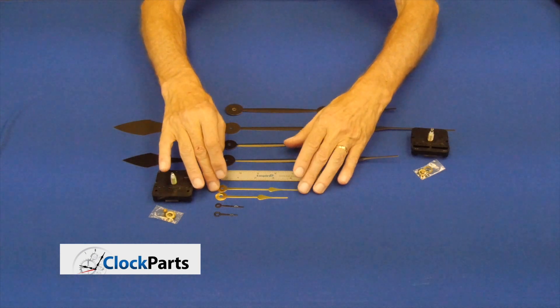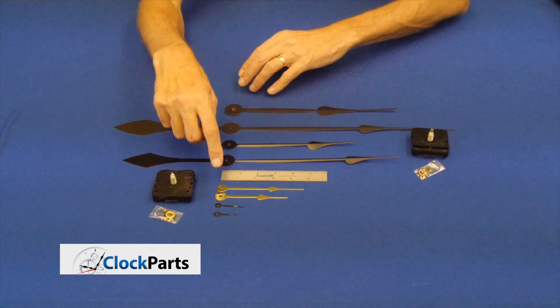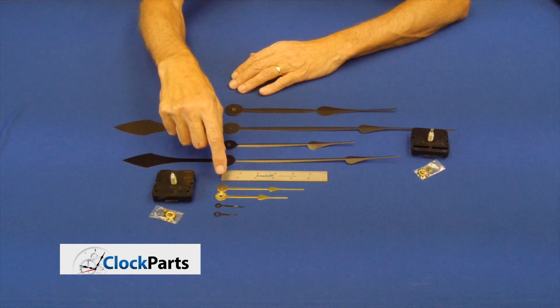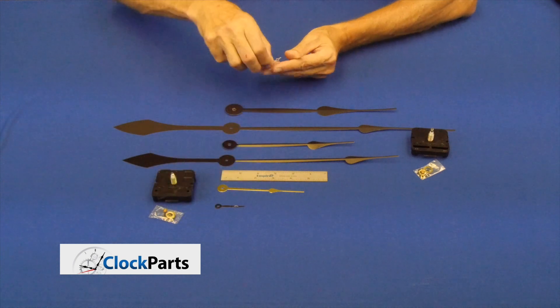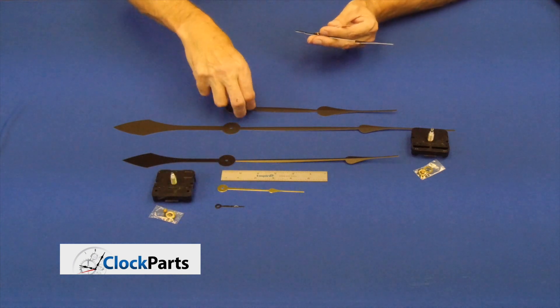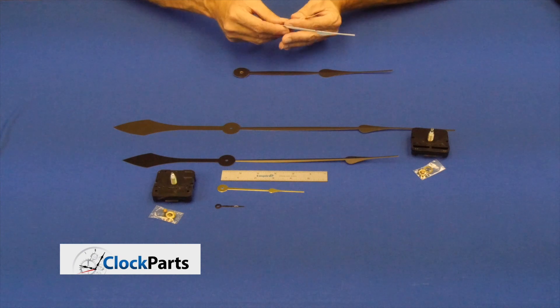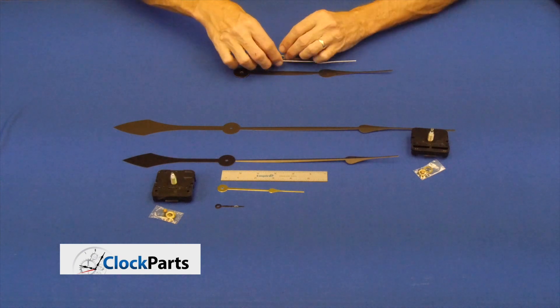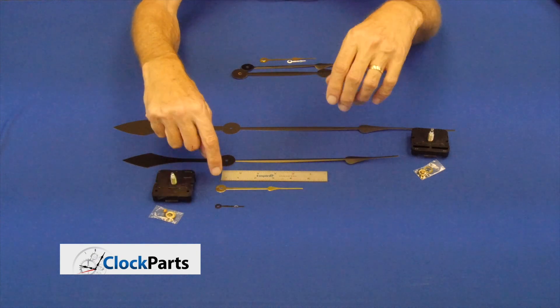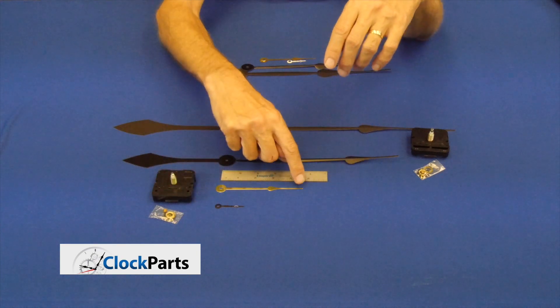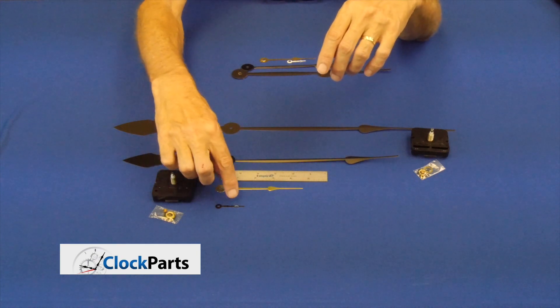The way you measure clock hands is really only with the minute hand. The hour hand is not used in measuring the length of your clock hands. So you can remove the hour hands. And the minute hands are measured from the mounting hole to the tip.